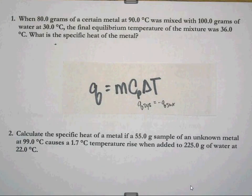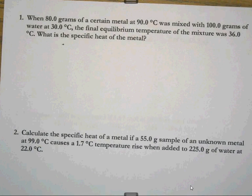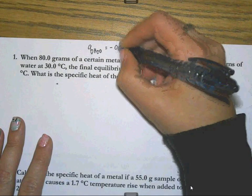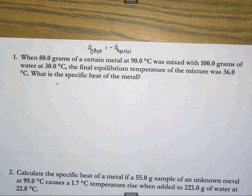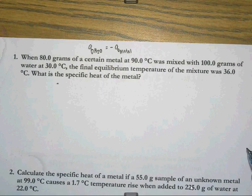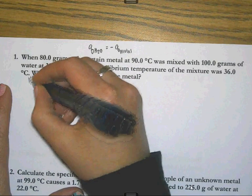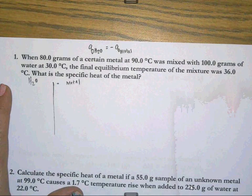So all of the problems that I have before me deal with metal being put into water. So in all of these, what we're going to assume is that the q of the water is going to be equal to the negative q of the metal. If you were in class when we did this, actually did an example of it. So in my first one, it says 80 grams of a certain metal at 90 degrees Celsius was mixed with 100 grams of water. So I'm going to start making myself a chart where I'm going to keep track of information as it's given for each substance.